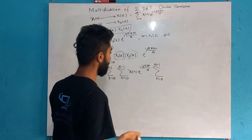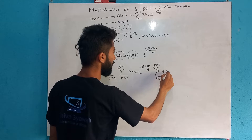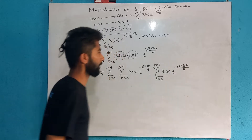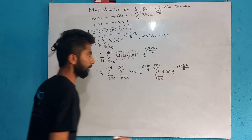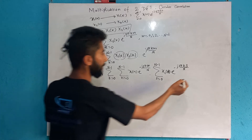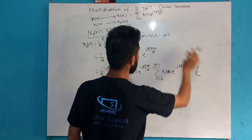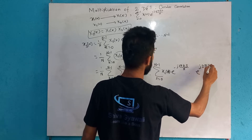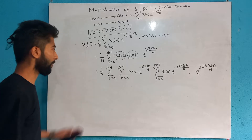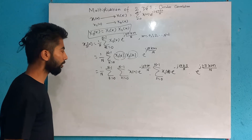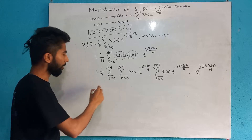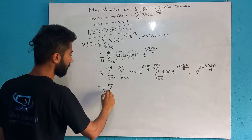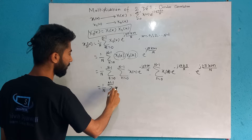Summation n equals 0 to N minus 1, x2[n] e to the power minus j 2 pi k n by N. This is equal to X2[k]. And X1[k] equals summation n equals 0 to N minus 1, x1[n] e to the power minus j 2 pi k n by N. Now we interchange the order of summation.